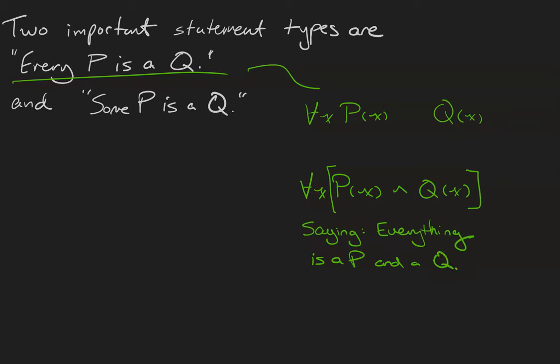That's not what I want to say. I want to say that everything that already is a p is a q, even though some things aren't going to have the predicate p apply to them.